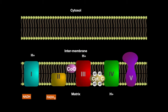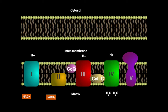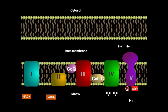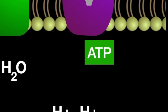The electrons are passed to cytochrome C, which passes them to complex IV, where oxygen acts as the final electron acceptor and pumps protons as well. The protons are allowed to run back into the mitochondrial matrix by flowing through complex V, which is ATP synthase. As the name entails, it synthesizes ATP during this process.